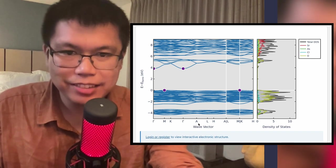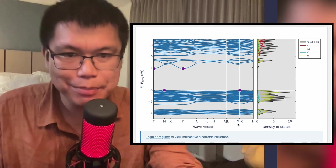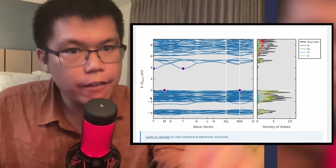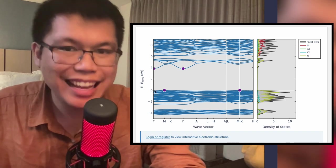Gamma to M to K to gamma to A to L to H, back to A, then L to M, then K to H. And as you can see, this guy does not have a thin band around that zero level.